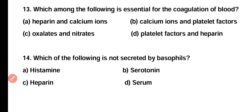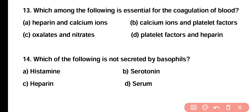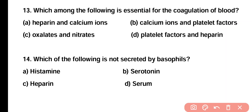Question number 13. Which among the following is essential for the coagulation of blood? Heparin and calcium ion, calcium ion and platelet factor, oxalates and nitrates, or platelet factor and heparin? Correct answer is option B. Calcium ion and platelet factors such as prothrombin as well as fibrinogen are essential for coagulation of blood.